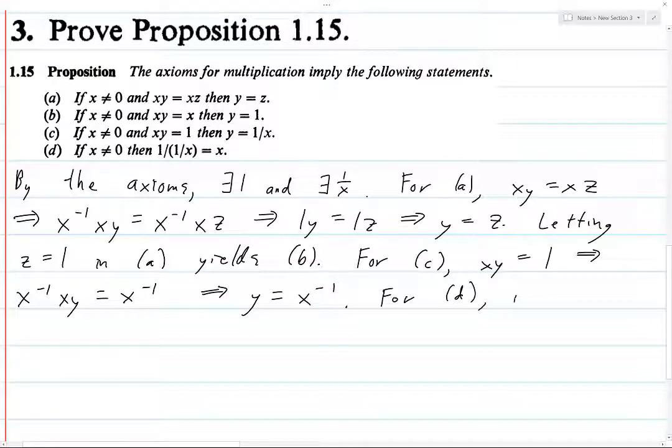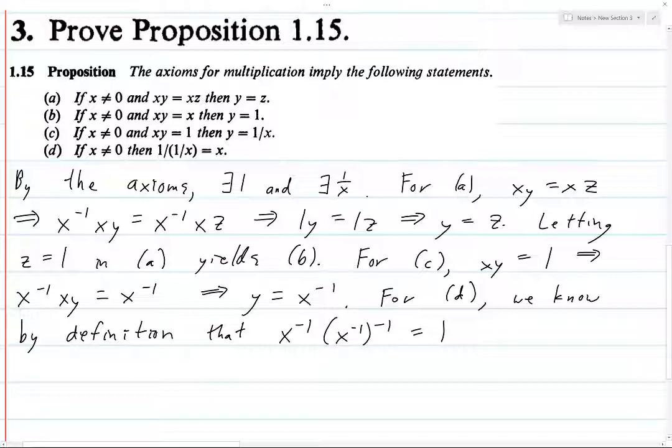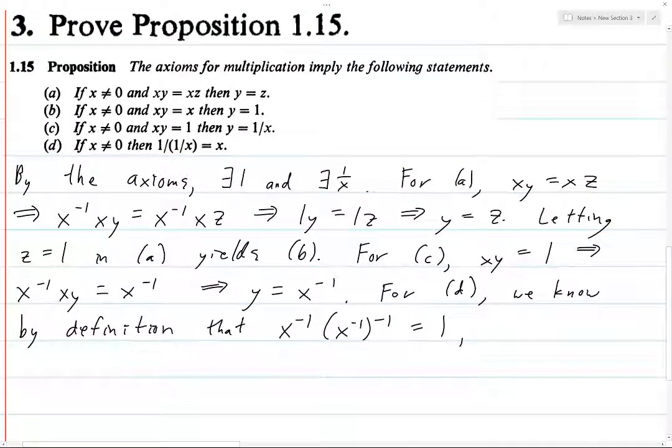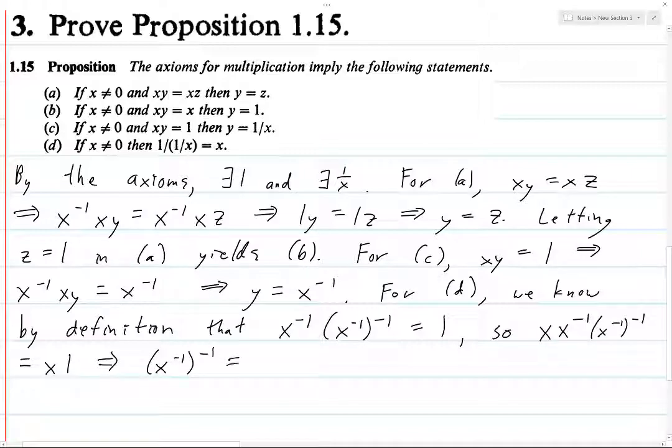For d, we know by definition that if you take x inverse and you multiply it by the inverse of x inverse, then you get 1. Because that's what it means to be the inverse of x inverse. It means that if you multiply it by x inverse, then you get 1. So what we can do is we can take this equation and multiply both sides by x, and we get x times x inverse times x inverse inverse equals x times 1. Which implies that, well, on the left-hand side, all we're left with is x inverse inverse, and on the right-hand side, we're left with x. And there we go. That's all there is to it.